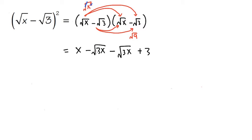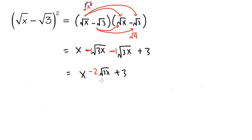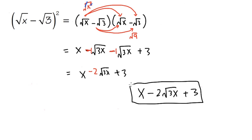As we can see, we have minus square root of 3x and another minus square root of 3x. This is like minus 1 square root of 3x, and then minus another 1 square root of 3x. Therefore, we have a total of minus 2 square root of 3x. We combine these together, and the final answer is x minus 2 square root of 3x plus 3. That's the answer.